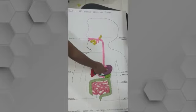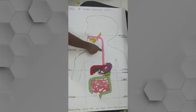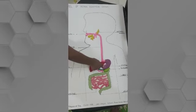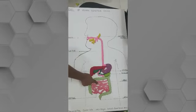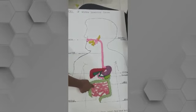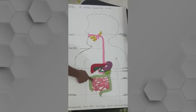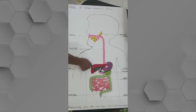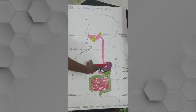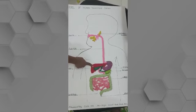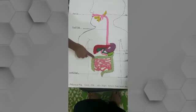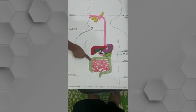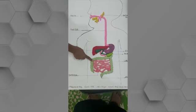This is the stomach. The digestive juices mix with the food here and the food then passes into the small intestine. Inside the small intestine, juices are produced that mix with the food. This is the liver. The liver and the pancreas also pour their juices into the small intestine. These juices help to completely digest the food. The undigested waste passes into the large intestine, where the extra water is absorbed. Then the solid waste passes out through the anus. Thank you very much.